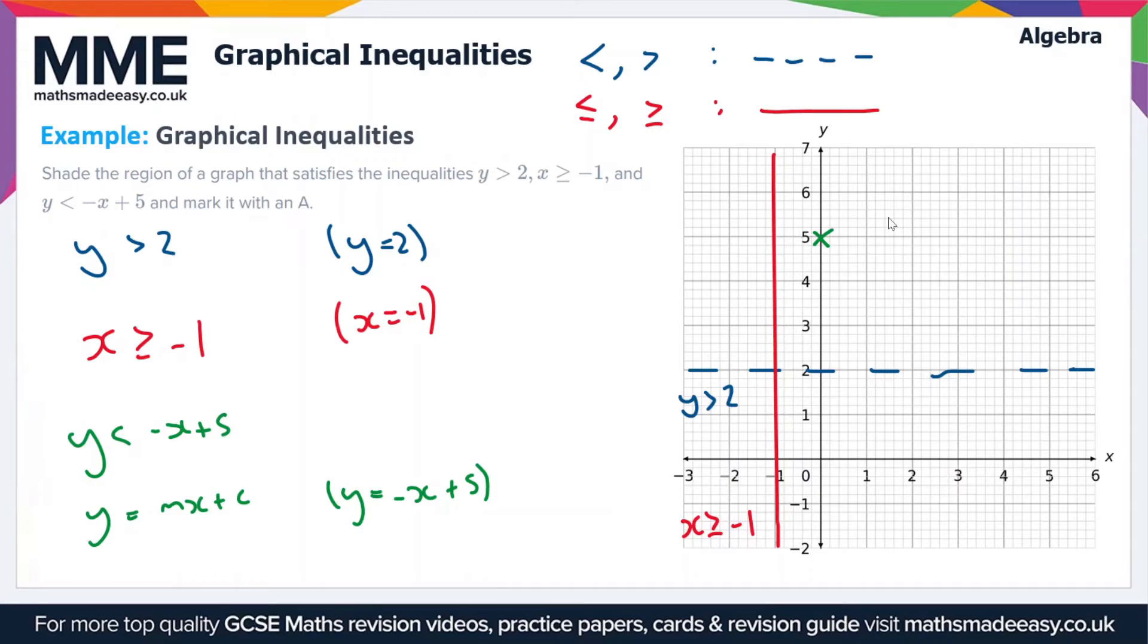This means that for every one square we go across, we go one square down. And as I say, we need to draw a dashed line here because it's a strict inequality. So the line is going to look something like this.